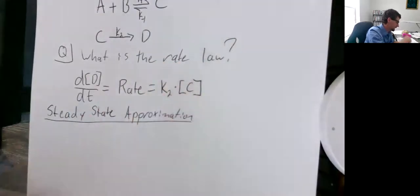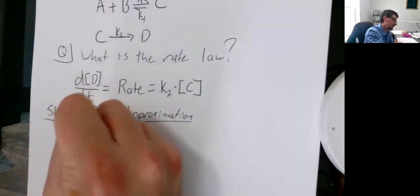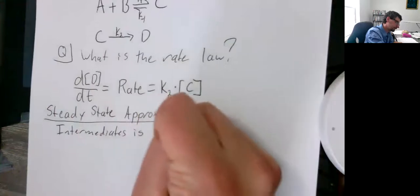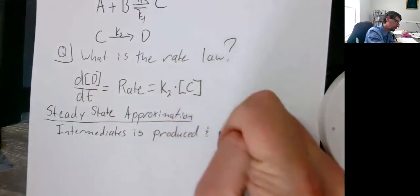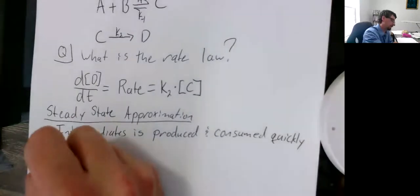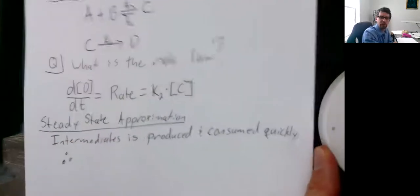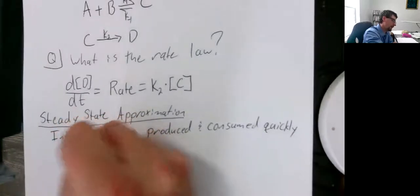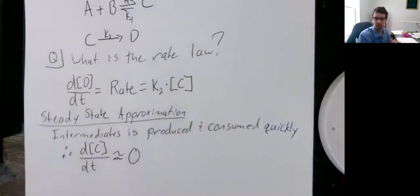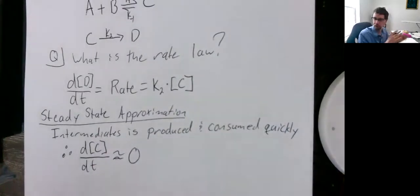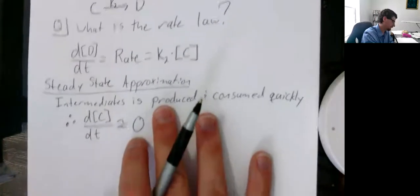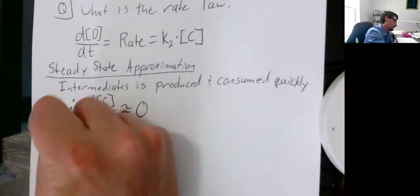What happens in the steady state approximation? Intermediates, in our case just C, is produced and consumed quickly. So therefore, what we're assuming is, if we kept track of the concentration of our intermediate C with respect to time, we could approximate that to be zero. As it's being produced, it's being consumed immediately. But we still need an expression for C if we want to plug in here. So let's develop one.